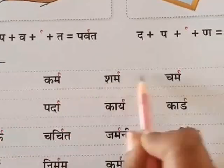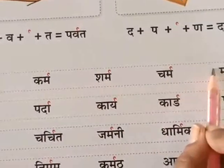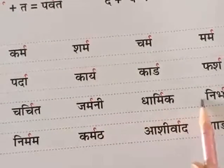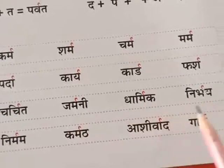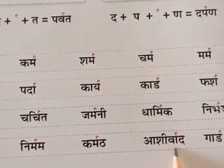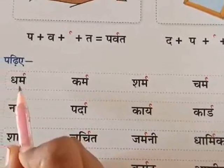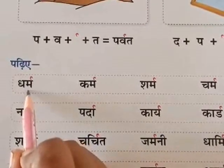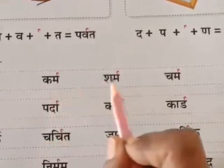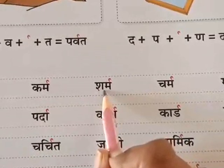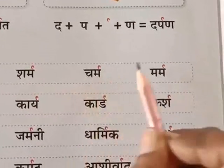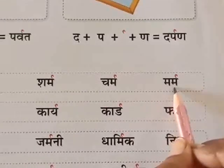Yeh hamaara do akshar ka hai, isse padheenge. Phir yeh teen akshar ka hai, isse padheenge. Aur last mein chaar akshar ka bhi hai, tho hum log isse bhi padheenge. Pahela hai: dharm, karm, sharm, charm, marm.